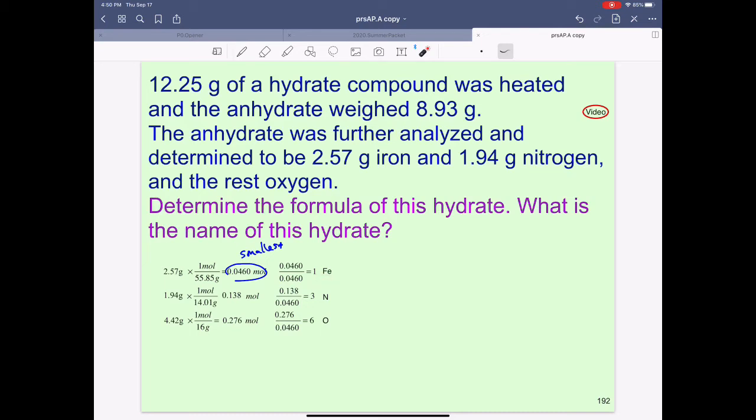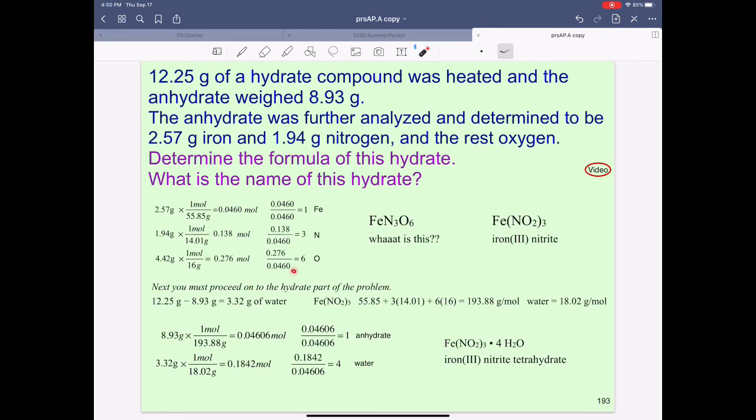And that will always give you a value of one. If you don't get a one, then you didn't choose the smallest value. And hopefully you'll be getting whole numbers for the other elements. And so what is this 1 to 3 to 6 ratio, FeN3O6? That doesn't look like any ionic compound that I'm familiar with. Hopefully you realize that you can extract a 3 and end up with NO2, putting the 3 outside, which of course is iron(III) nitrite.